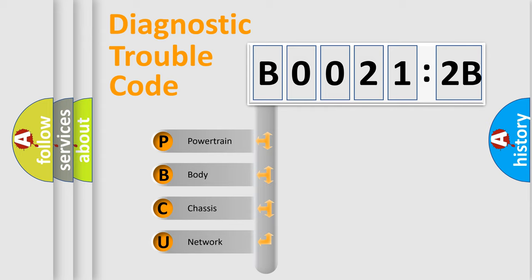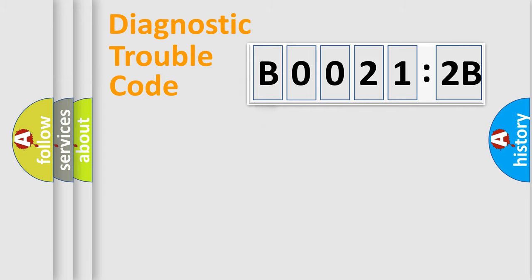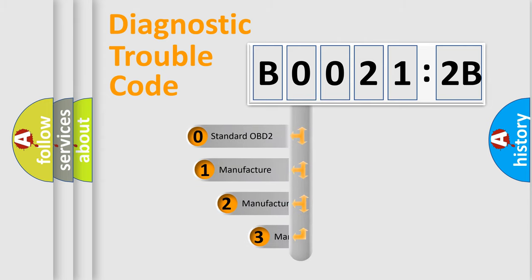We divide the electric system of the automobile into four basic units: powertrain, body, chassis, and network. This distribution is defined in the first character code.